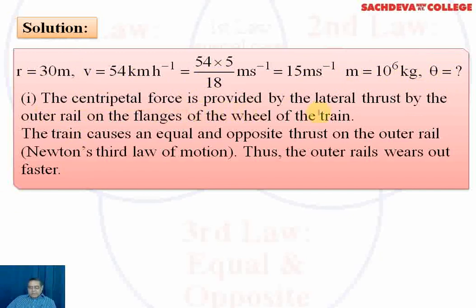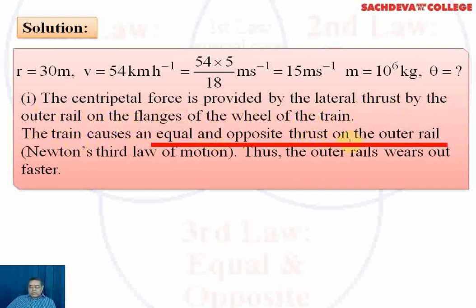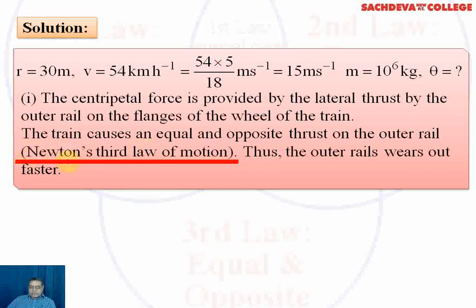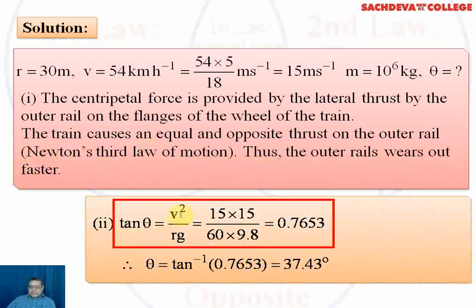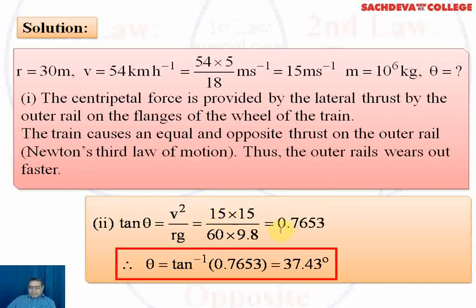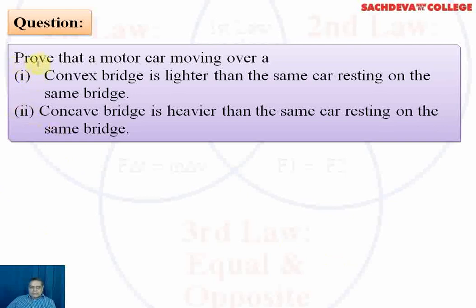The centripetal force is provided by the lateral thrust of the outer rail on the flanges of the train's wheels. The train causes an equal and opposite thrust on the outer rail — action and reaction are equal by Newton's third law of motion. Therefore the outer rail wears out faster. Using tan θ = v² / rg and computing, θ = tan⁻¹(0.7653) = 37.43 degrees.